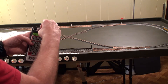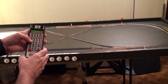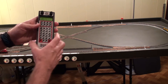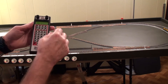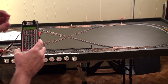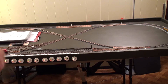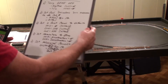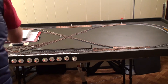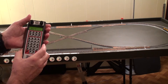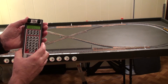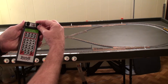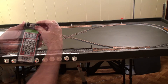If I just change the throttle, nothing will happen because it's an advanced consist. But if I go into programming on the main for 8500 and I want to change the maximum — Vmax is CV5 — I'm going to change CV5 to a value of 200, dropping it a fair amount.